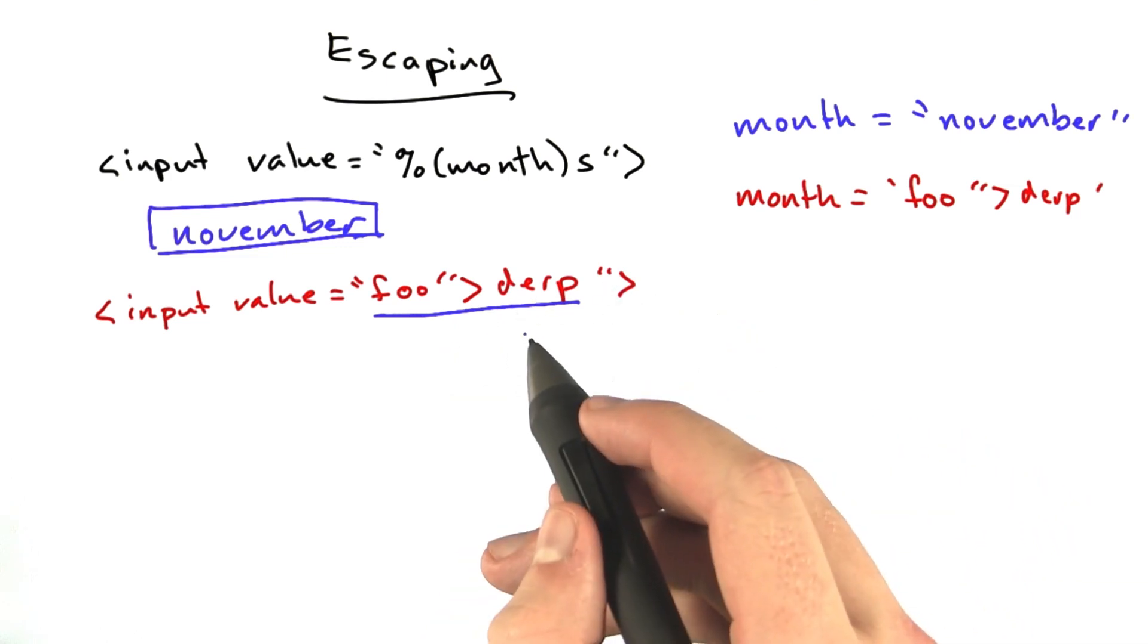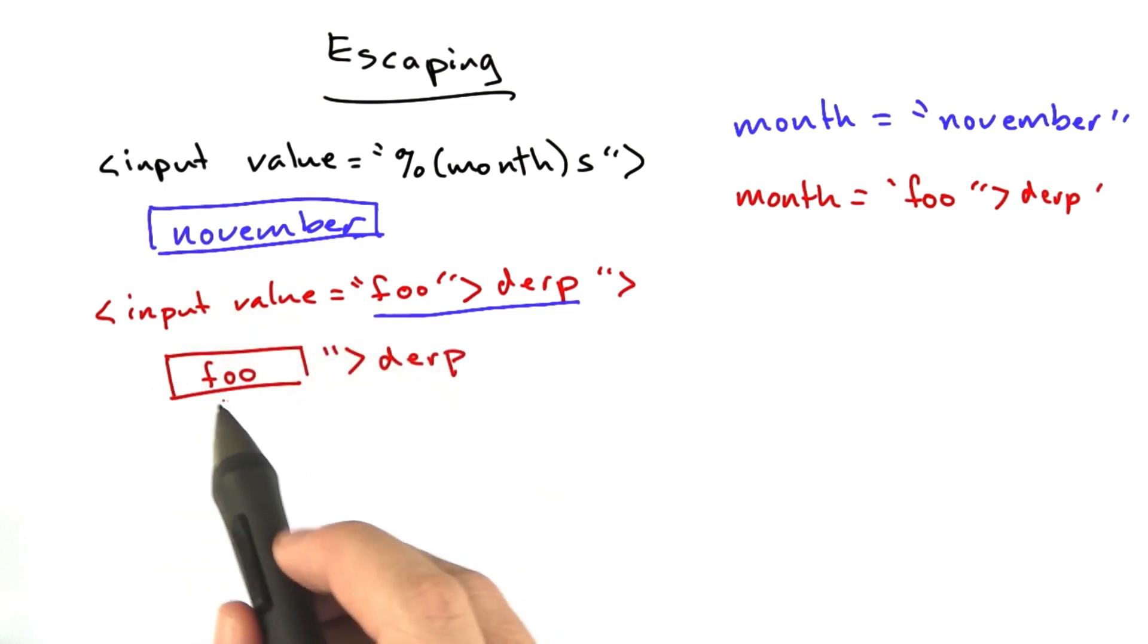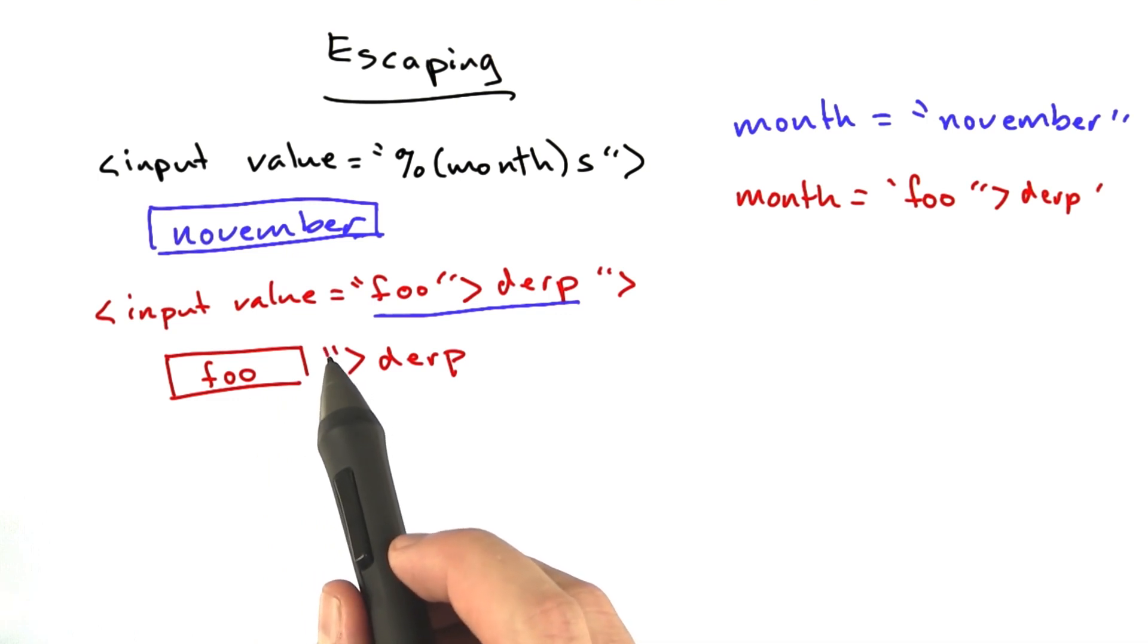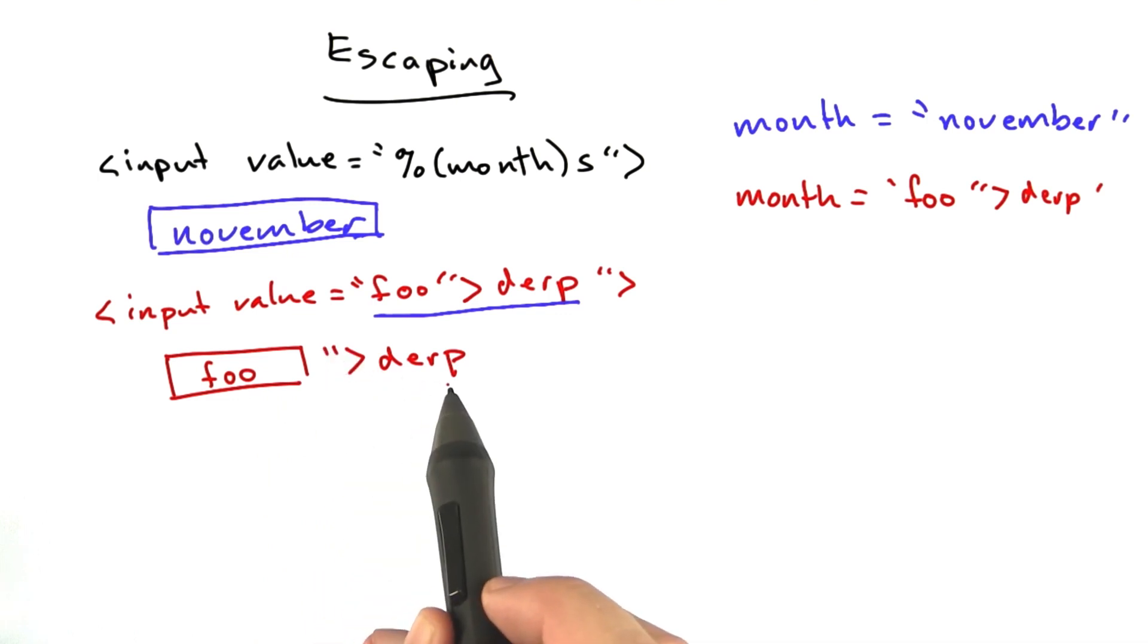So that's obviously not the behavior we want. The rendered HTML ends up looking, or in the browser ends up looking something like this. You've got a text box with the word foo in it, and then just a quote and an angle bracket and the string derp just hanging out there.